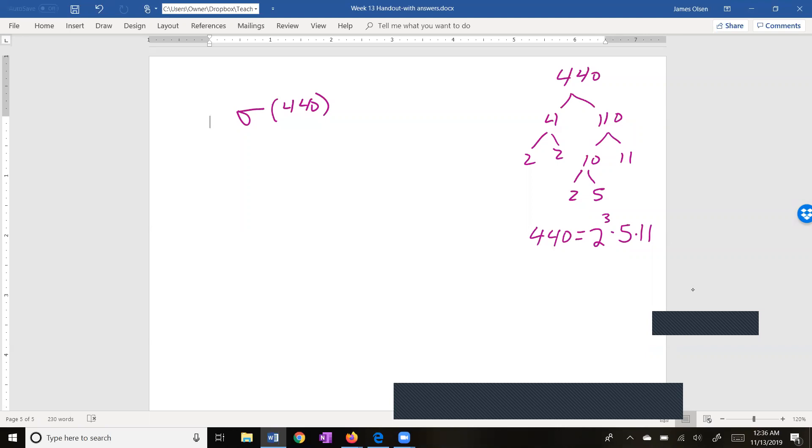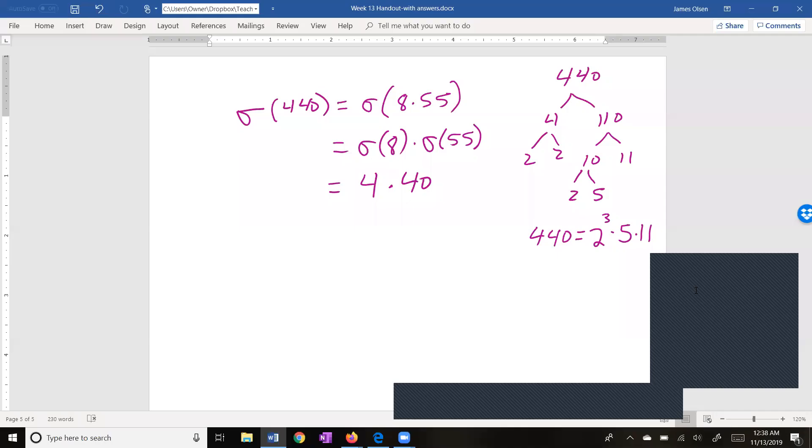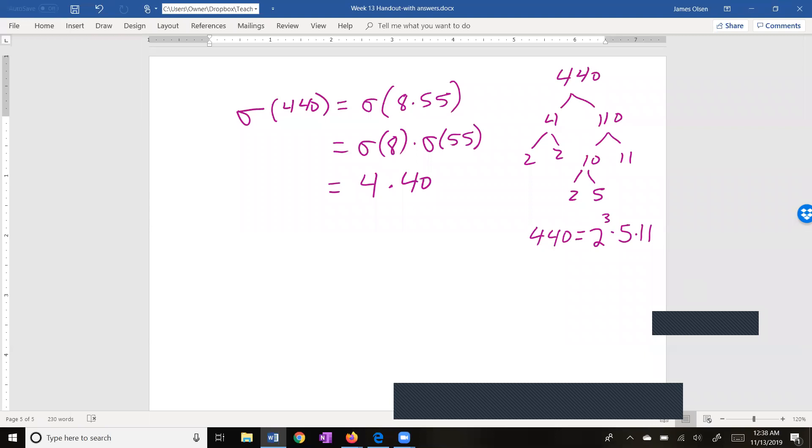So the nice thing about the prime factorization is we can divide this up into two numbers that are relatively prime. I could do 8 times 55 or I could do 88 times 5. It doesn't really matter. That's the beauty of mathematics. It's going to work either way. I think I'll do 8 times 55. Since 8 and 55 are relatively prime, this is equal to phi of 8 times phi of 55. Since both these numbers are less than 100, I can look those up in my table. 4 times 40 is 16 with a zero.